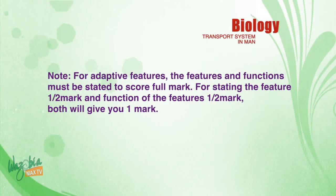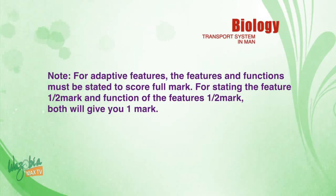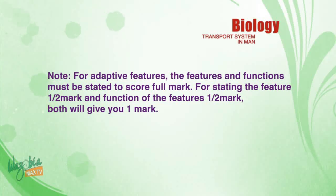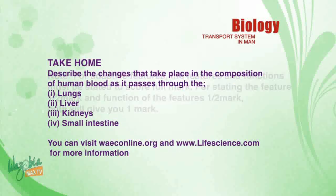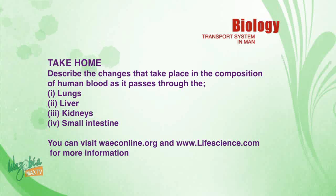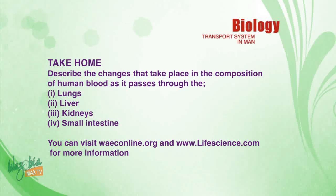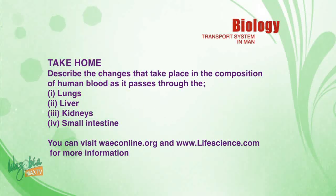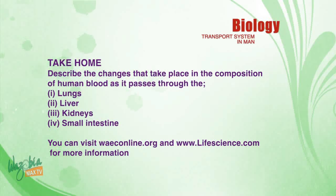Note: for adaptive features, both the feature and the function must be stated to score full marks — the feature earns a mark and the function earns a mark. Take-home assignment: Describe the changes that take place in the composition of human blood as it passes through (one) the lungs, (two) the liver, (three) the kidneys, (four) the small intestine. Submit your assignment. You can visit www.lifetimes.com for more information.